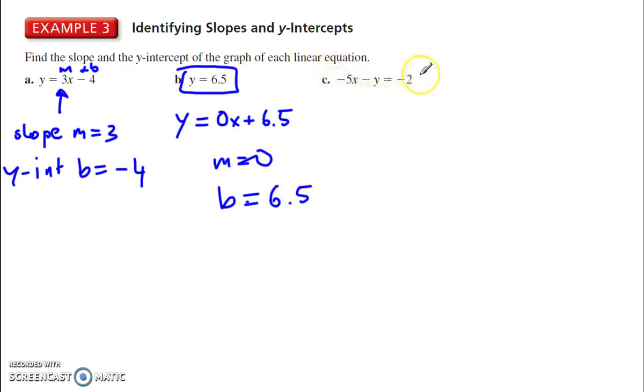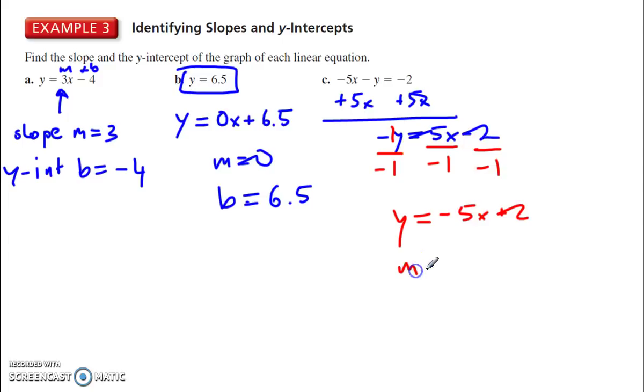Finally, this one here is not in slope-intercept form either. So we have to solve for y. Add 5x to each side. That gives me negative y is equal to 5x minus 2. And then y is still not quite solved. Remember, anytime a variable doesn't have a coefficient, put a 1 there. Divide by negative 1. Means I have to divide every term by negative 1. Then I get y is equal to negative 5x plus 2. So m is equal to negative 5. And b is equal to 2.